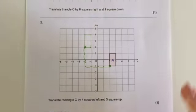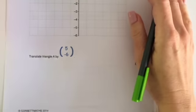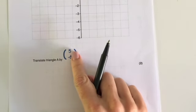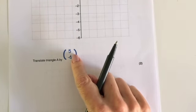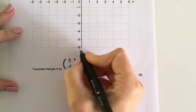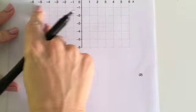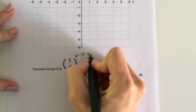Another way that they can show you a translation is in this. This is called a vector. So it's where there are two numbers, one above the other in brackets. And what you need to know is that the top number tells you the movement on the x-axis. So this is the x-axis, so left or right.